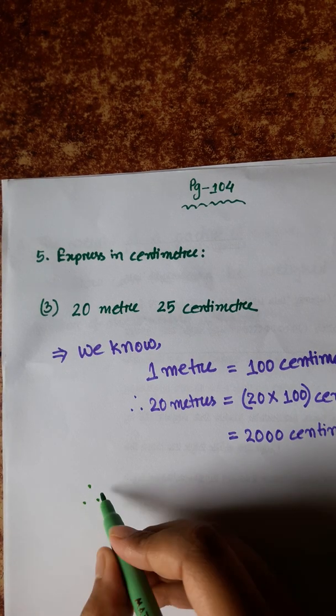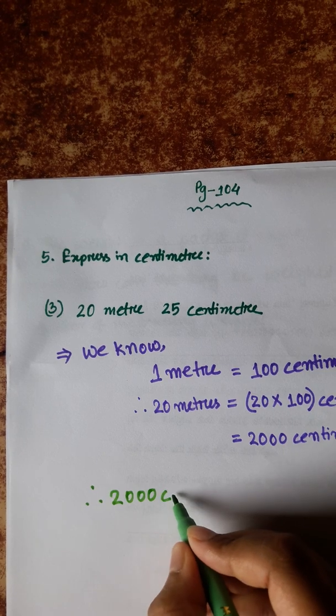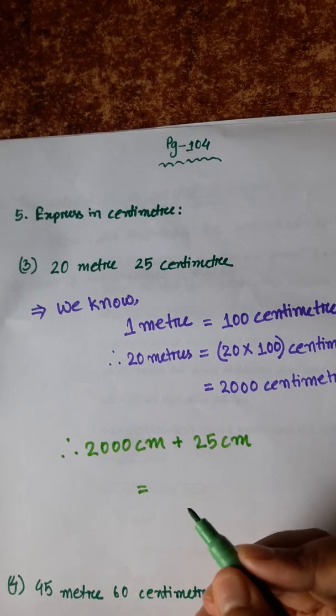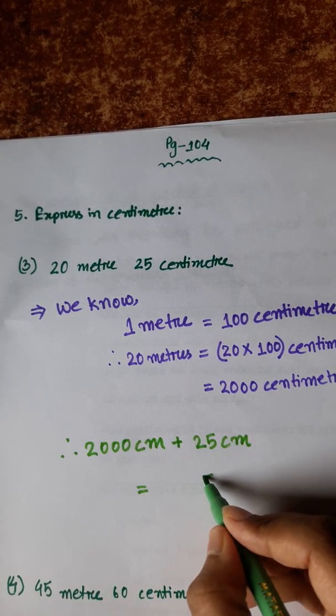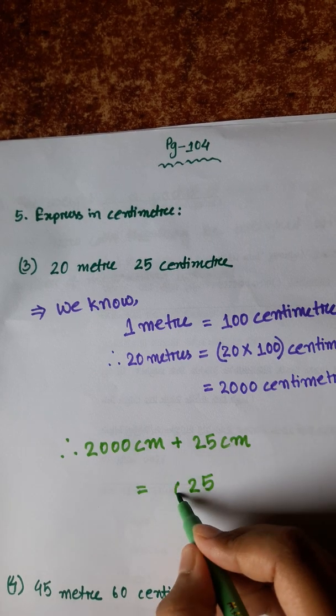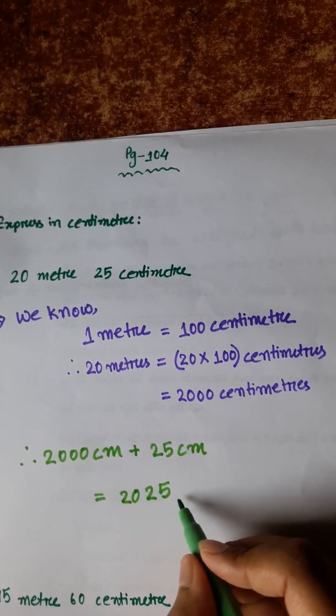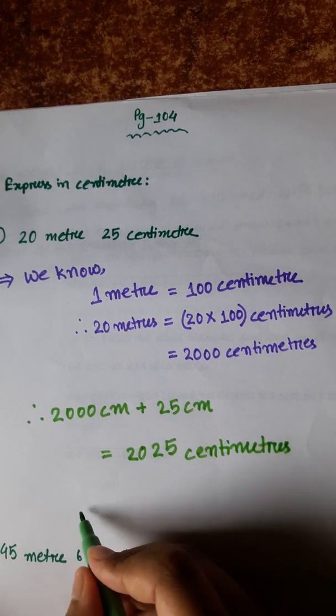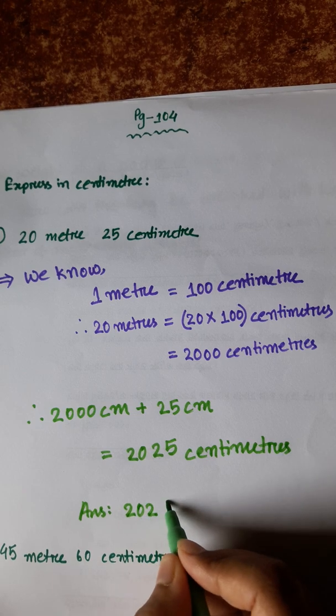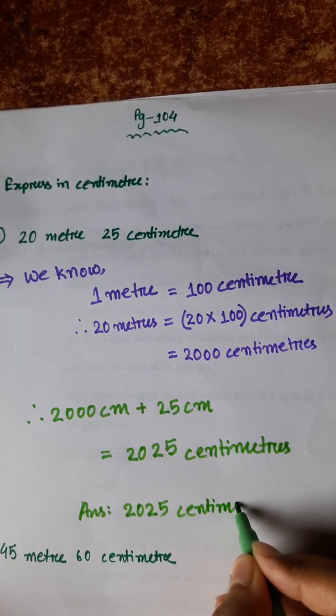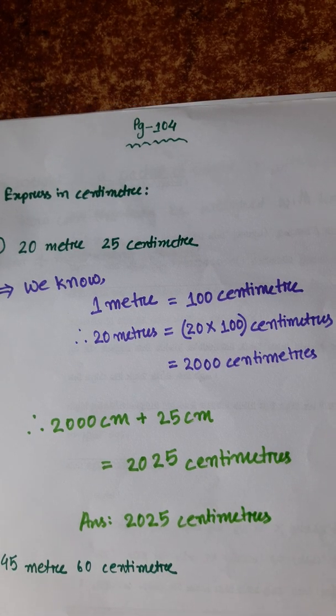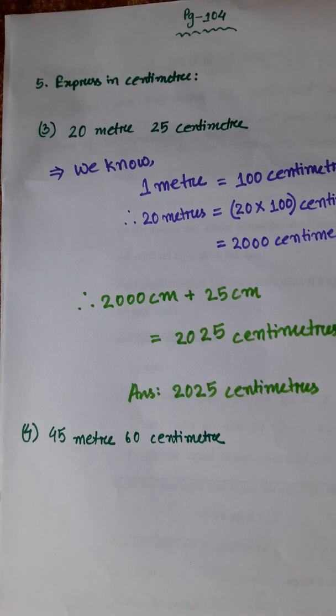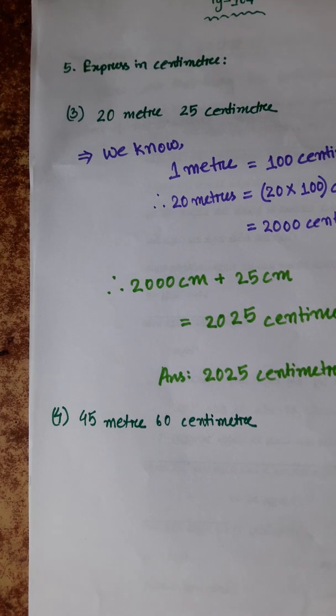Now we have 25 centimeter more, so we will add 25 with 2000 centimeter. 2000 centimeter plus 25 centimeter equals 2025 centimeters. So answer is 2025 centimeters.